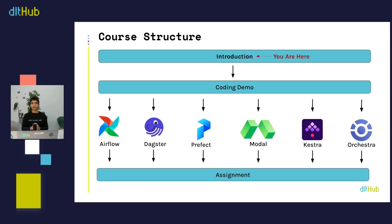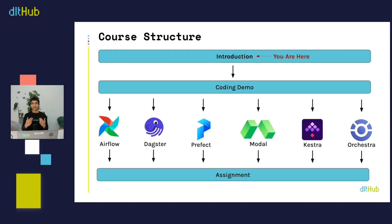We're almost done with the introduction — great job making it this far. After this introduction, there's a coding demo showing the DLT pipeline we'll run and deploy for each of the six orchestrators. From the coding demo onwards it will be hands-on, with six subsections each dedicated to a single orchestrator for an in-depth exploration and deployment walkthrough. After those six subsections, we'll go over the assignment — a basic task you'll need to complete to finish the course and get your certification. I hope you're as excited as I am, and I'll see you at the coding demo.